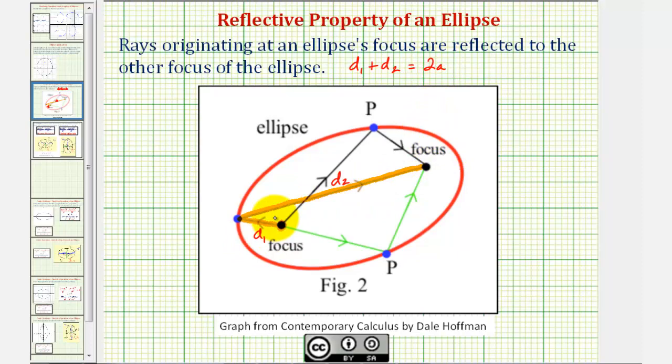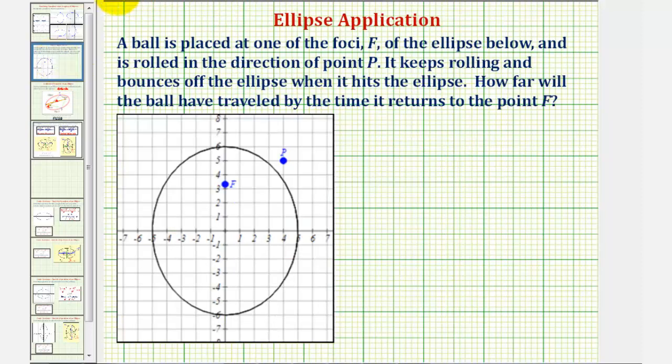So if we go back to our problem, let's first plot the other focus, which would be here. And also notice that the major axis, this axis here, is 12 units. So we know that two A equals 12 units.